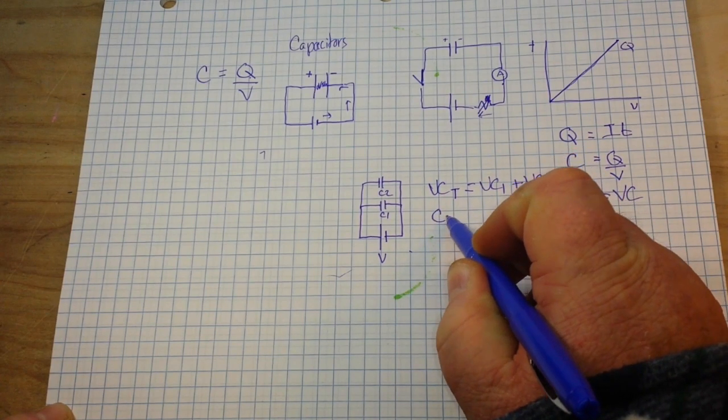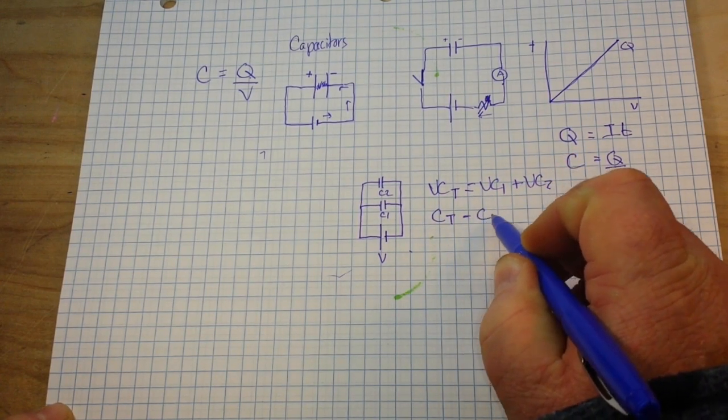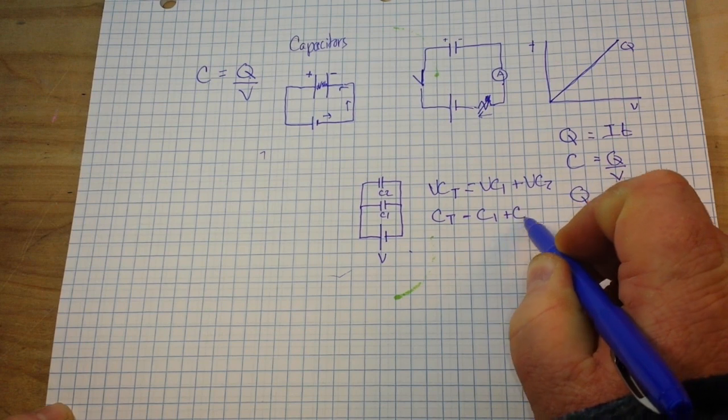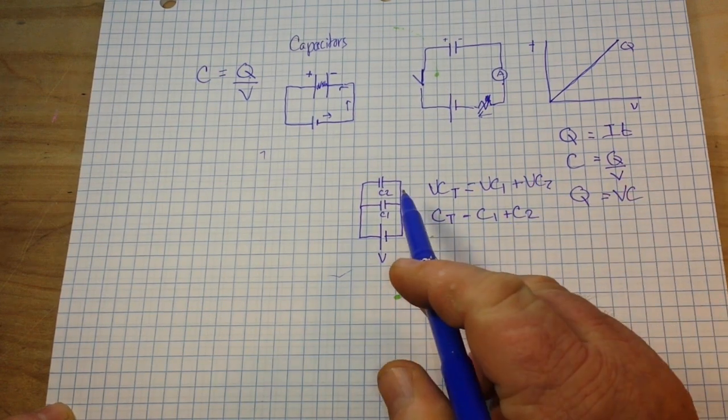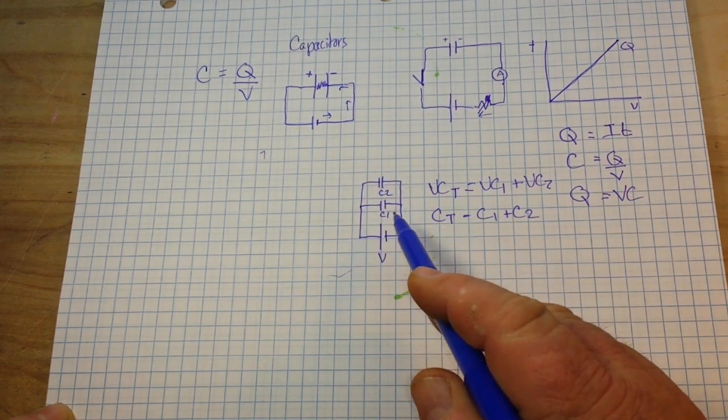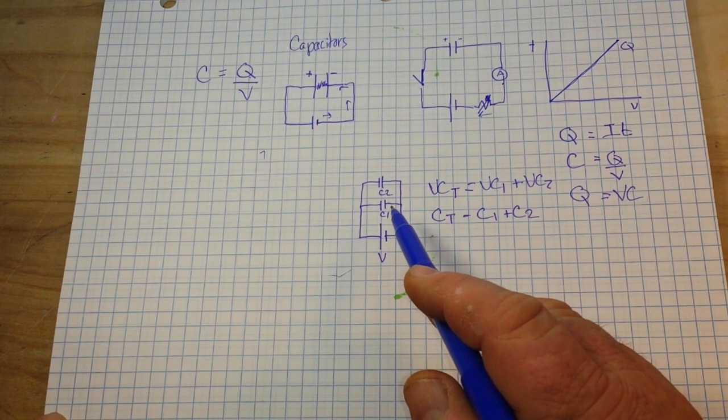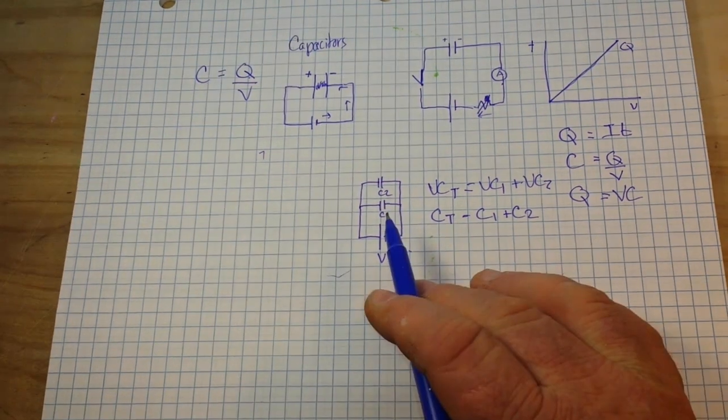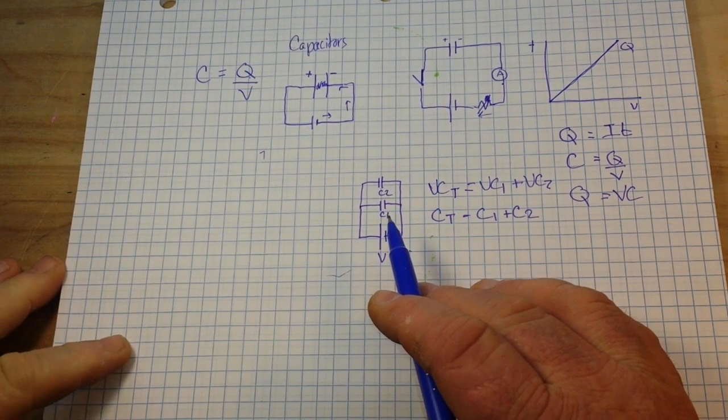So, our capacitance total is equal to C1 plus C2. So, in parallel, the capacitors are additive. Okay, pretty simple. In parallel, so we're going to have to do serial.